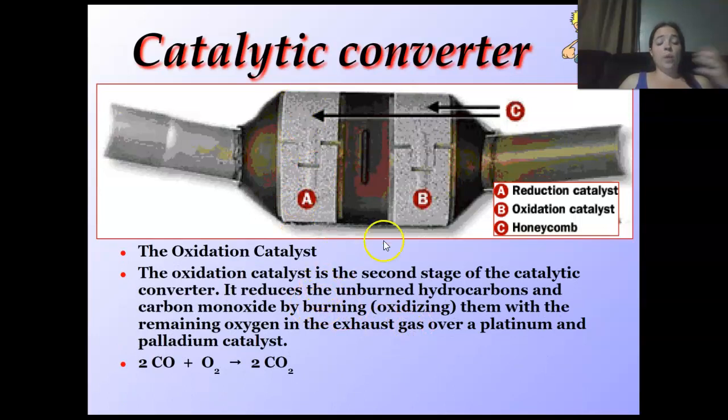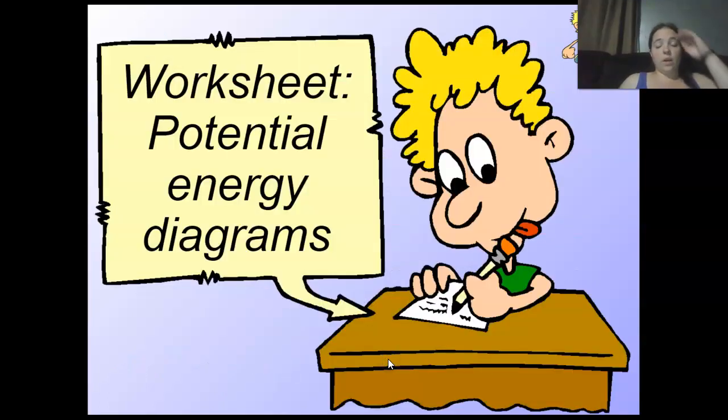And then the next thing, you have the oxidation catalysts, which reduces the unburned hydrocarbons, the VOCs, carbon monoxides, by burning and oxidizing them with remaining oxygen from here over a platinum-palladium catalyst. Uses the oxygen from here to reduce the carbon monoxide.